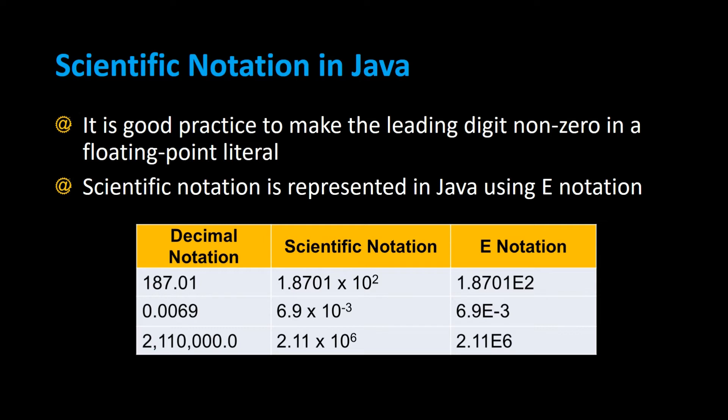In another example, 0.0069 in scientific notation would be 6.9 times 10 to the negative 3, which means you move the decimal three places to the left to get the original number back again. And in e-notation it would be 6.9e-3.